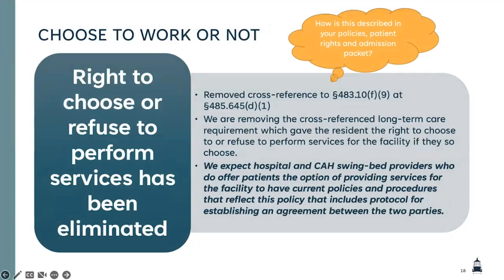Regarding the right to choose or refuse to perform services — this requirement has been removed, but we do want hospitals and critical access hospital swing bed program providers who offer patients the option of providing services for the facility to have current policies and procedures that reflect a policy including establishing an agreement between two parties. So how are we describing this in our policies or patient rights and admissions practices — who they choose, and how do they refuse to perform services for the facility?